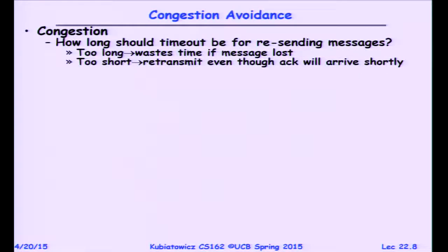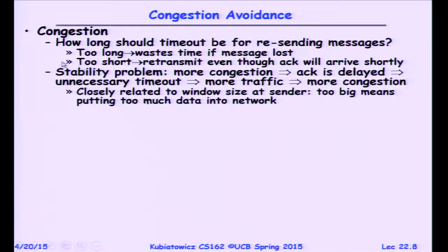How long should the timeout be for resending messages? If it's too long, you waste time when the message is lost. If it's too short, you retransmit even though an ACK is coming — just delayed. Not only must we adjust window size, we need to dynamically adjust the timeout based on conditions. There's a clear stability problem: more congestion causes ACKs to be delayed, which causes unnecessary timeouts, which shoves more packets into the network, which slows things down even more — a positive feedback loop that's pretty bad.